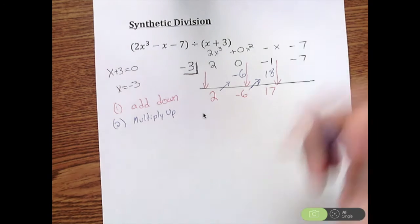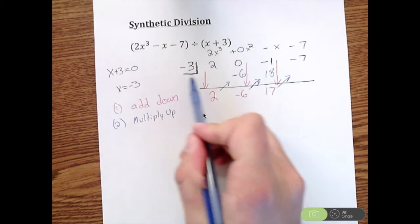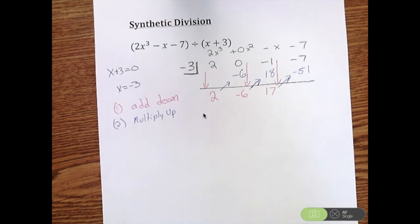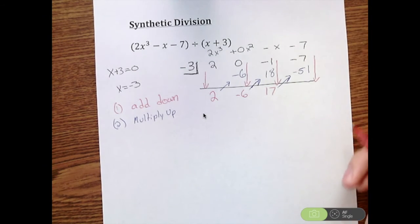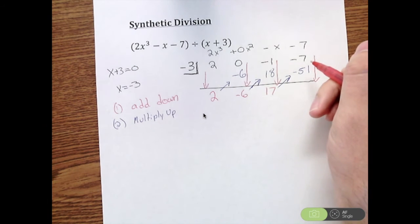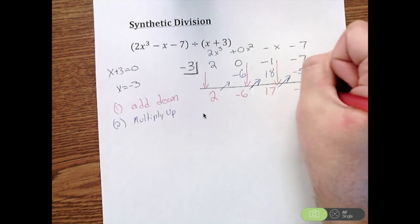And then we have to multiply back up one more time. 17 times negative 3 is negative 51. And then add straight down. Negative 7 plus negative 51 is negative 58.